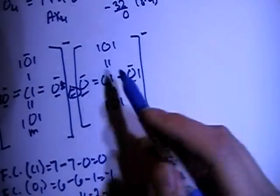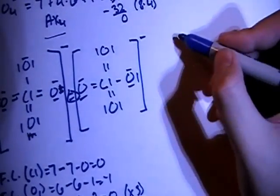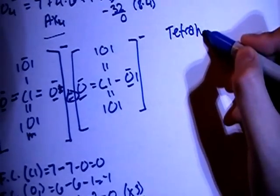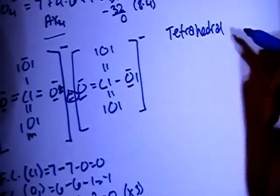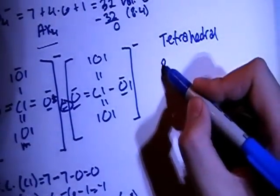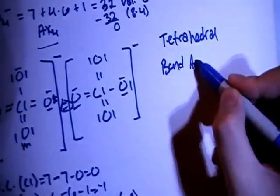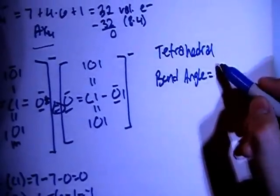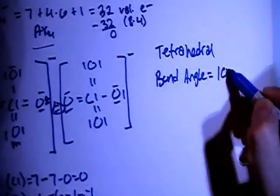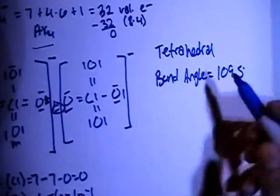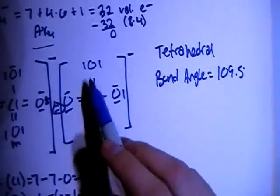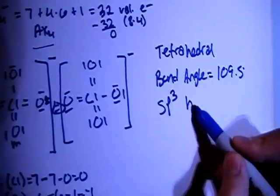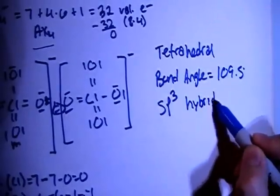Because it's the AX4 shape, that means it's going to be a tetrahedral shape, and the bond angle in the tetrahedral shape is going to be approximately 109.5 degrees. In terms of hybridization, there are 4 bonding sites, so it's SP3 — 1 S and 3 Ps — SP3 hybrid orbitals.